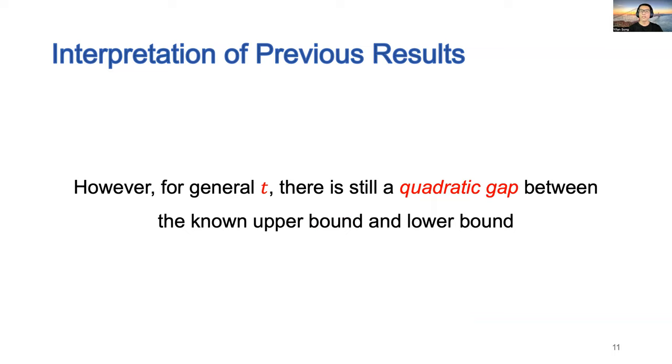However, for general t, even if t is equal to n/2, there is still a quadratic gap between the known upper bound and the lower bound.